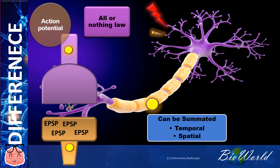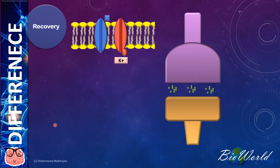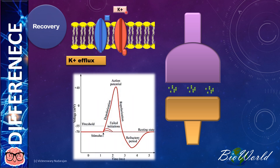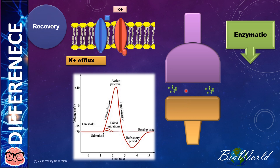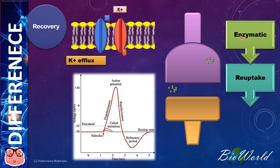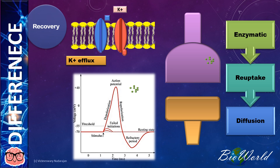Next we move on to the difference on how these axons or synapses recover. The axon recovers by the efflux of potassium ions, so that is when you see the graph moves down and becomes more negative in potential. For the synapse, the recovery involves the removal of the neurotransmitter: one is by hydrolysis by enzymes, and the second is by re-uptake where energy is used to actively transport neurotransmitters back into the synaptic knob, or by simple diffusion.